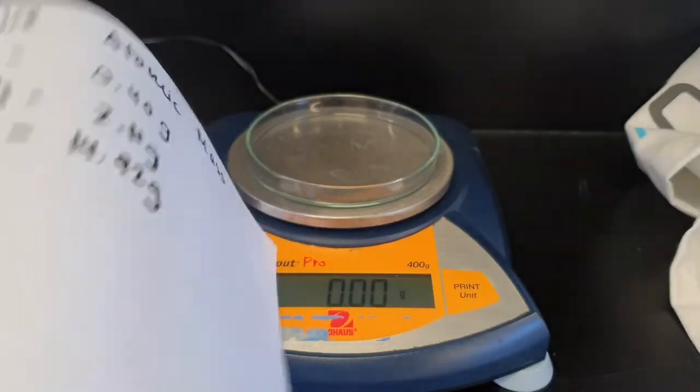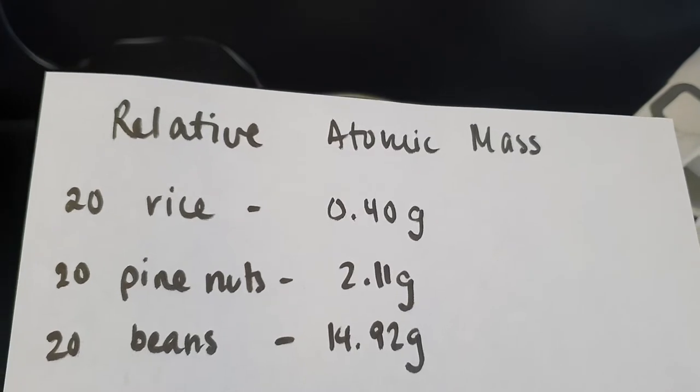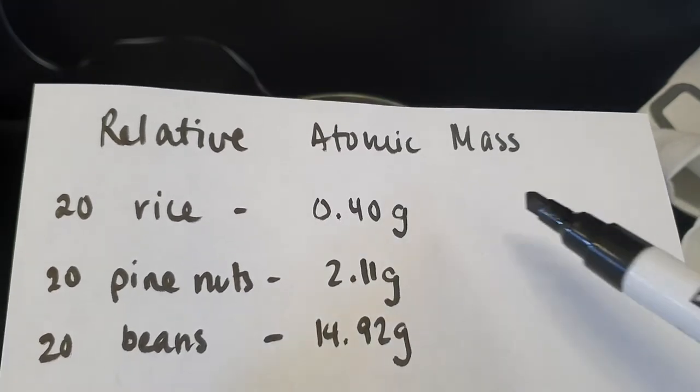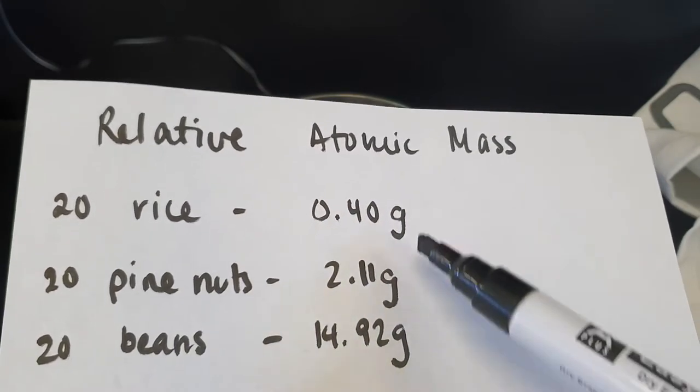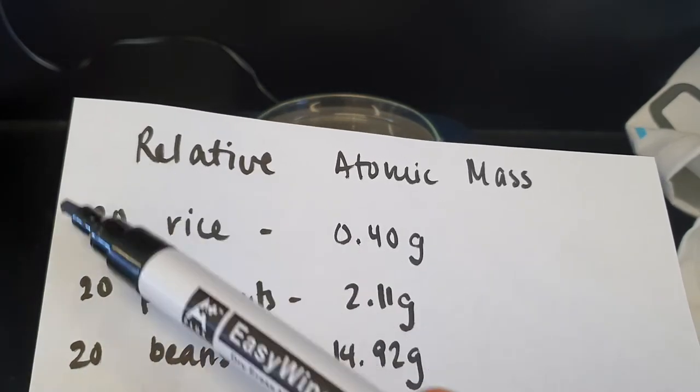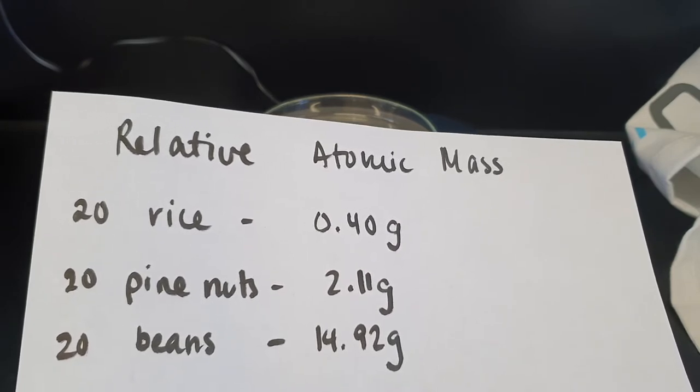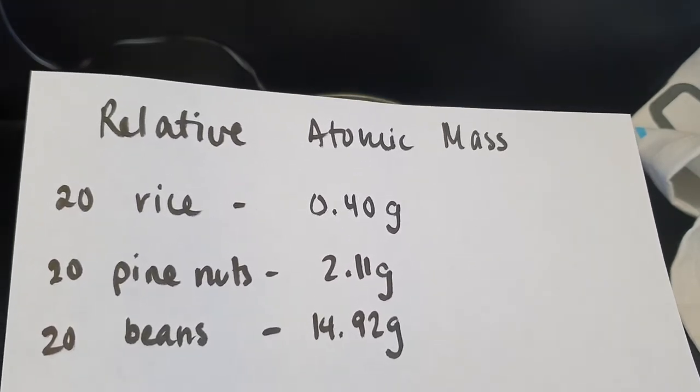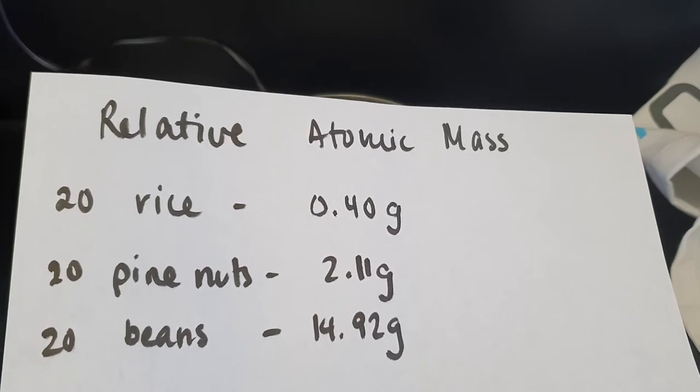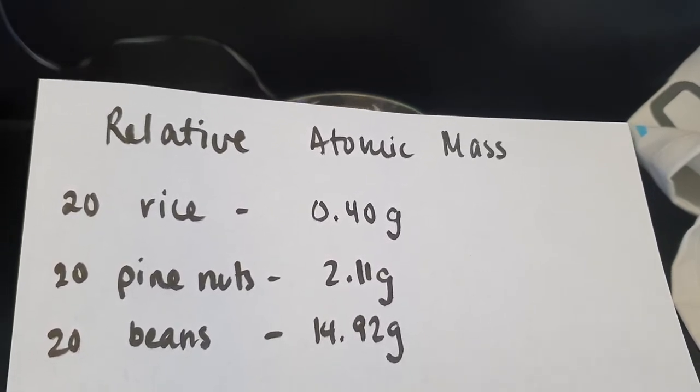So what we're going to do, how do we make these relative? In this instance, we're going to compare each substance to the smallest one. And this is very similar to what early chemists did when trying to figure out relative atomic masses. They compared to the mass of hydrogen, which is our smallest known atom.